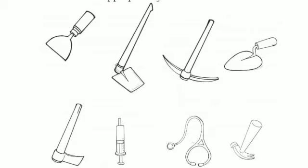Next is a syringe, which is used to inject medicines into patients. The other one is a stethoscope, which is used to treat patients and diagnose disease. And the last one is a hammer, which is used for driving nails and also for pulling out nails. So these are the tools of various occupations.